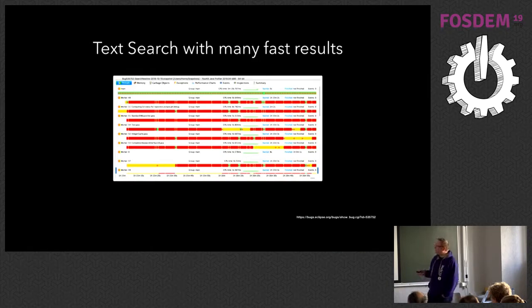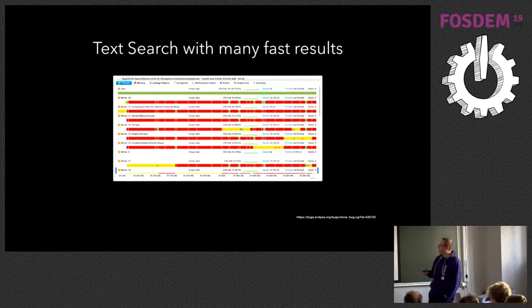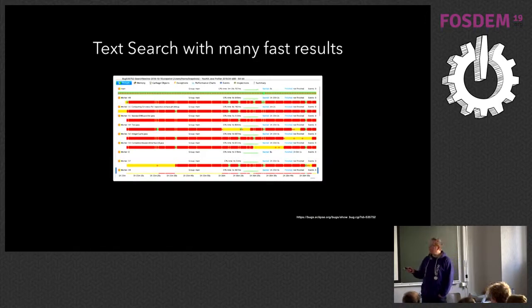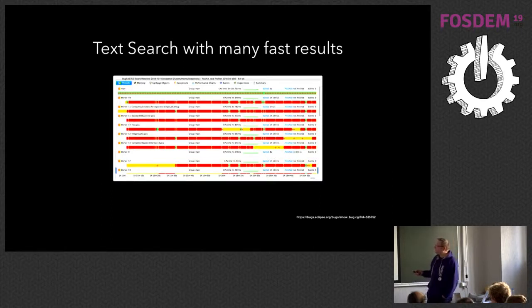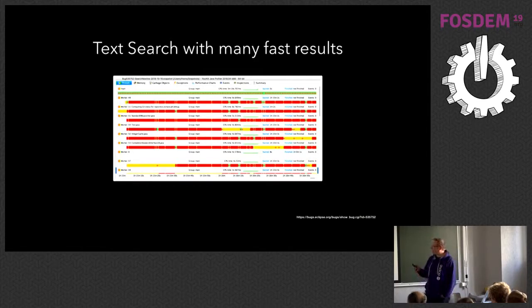If you make a text search with very fast results, you can experience blocking of threads. The red bars show that threads are waiting on each other. Sometimes they do — it's not actually a deadlock, but close to it.